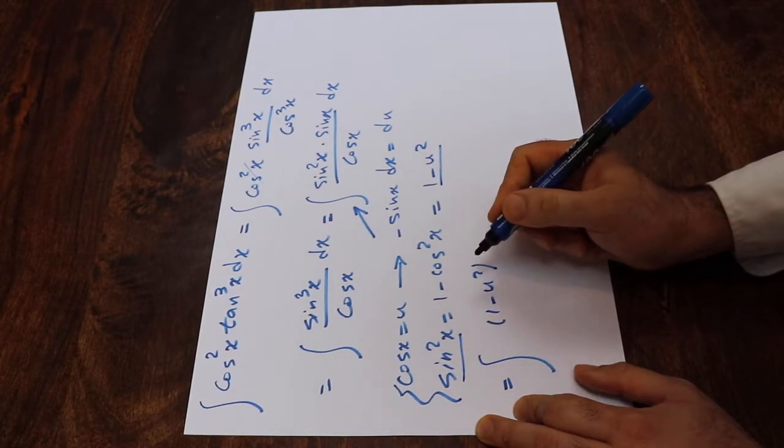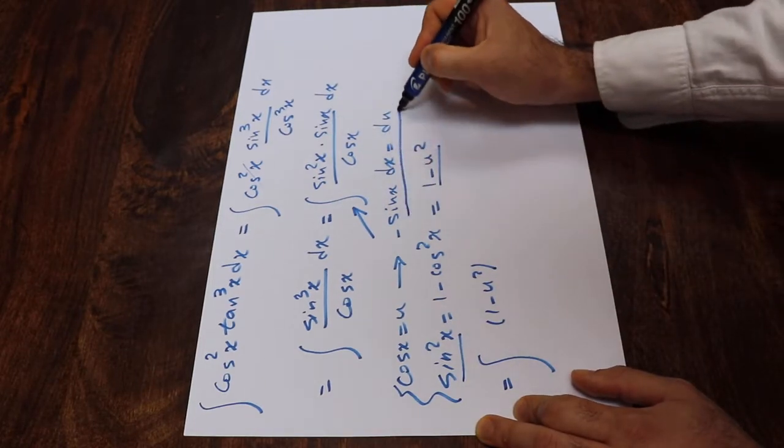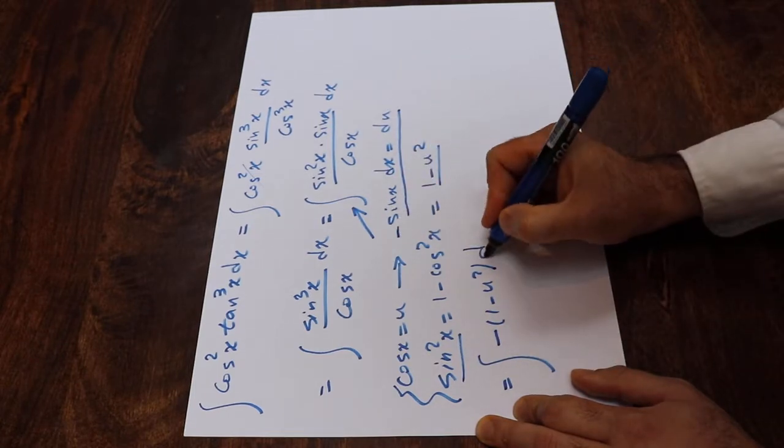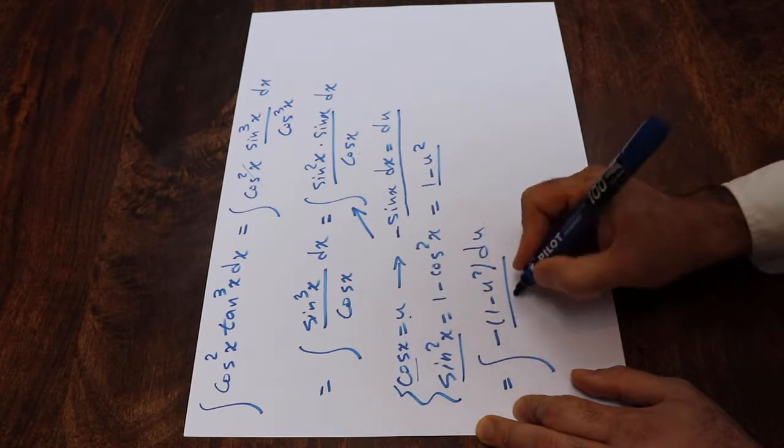And then, instead of sine x dx, you see here sine x dx, I write minus, there is a minus sine here, minus du. Divided by cosine x, and cosine x is u, so it's divided by u.